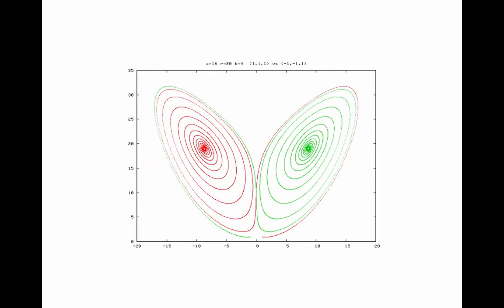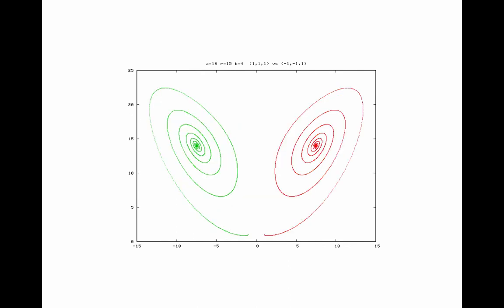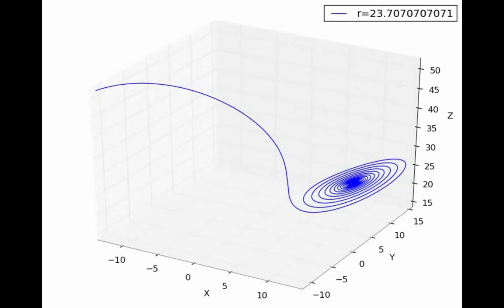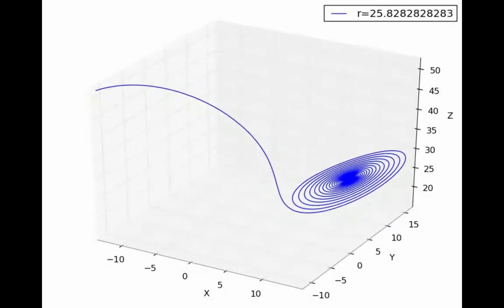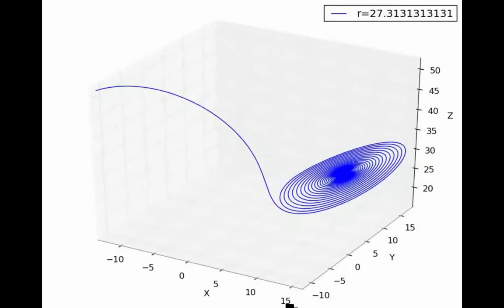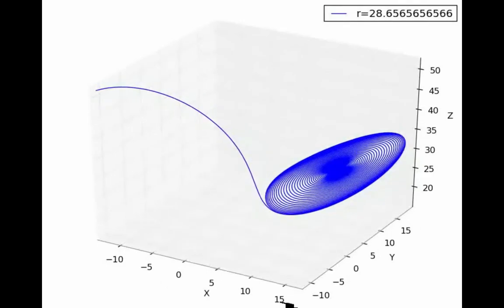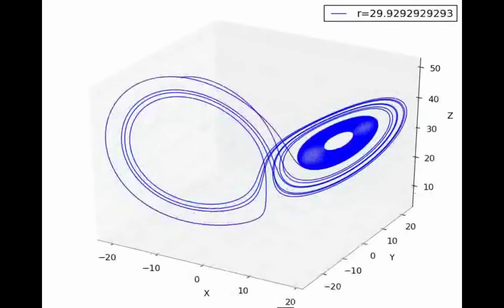If we continue to turn down the heat, the convection rolls die out faster and faster. Here's a movie showing what happens to the attractors in the Lorenz system as we raise R from about 23. You can see the fixed point moving up and the transient getting longer and longer — and then pop: chaotic attractor. That pop is the bifurcation.